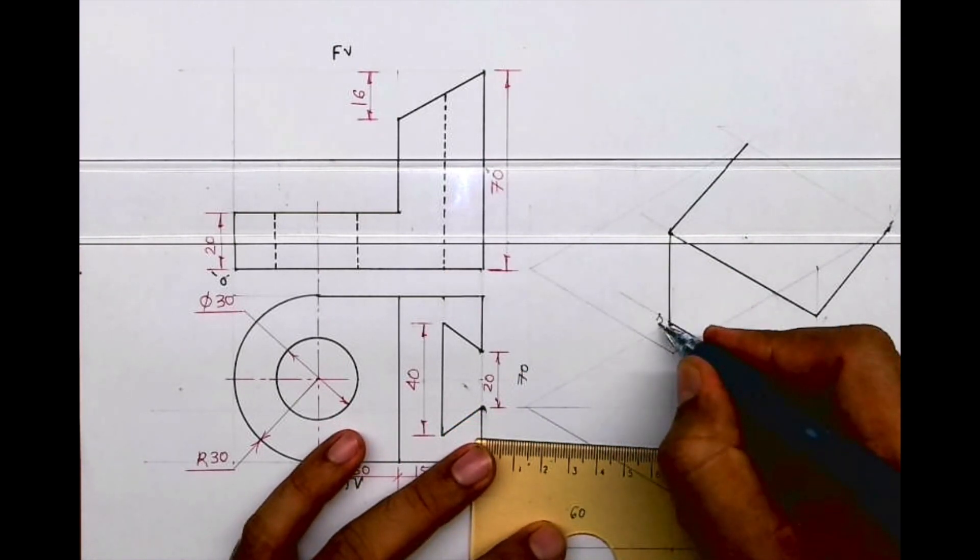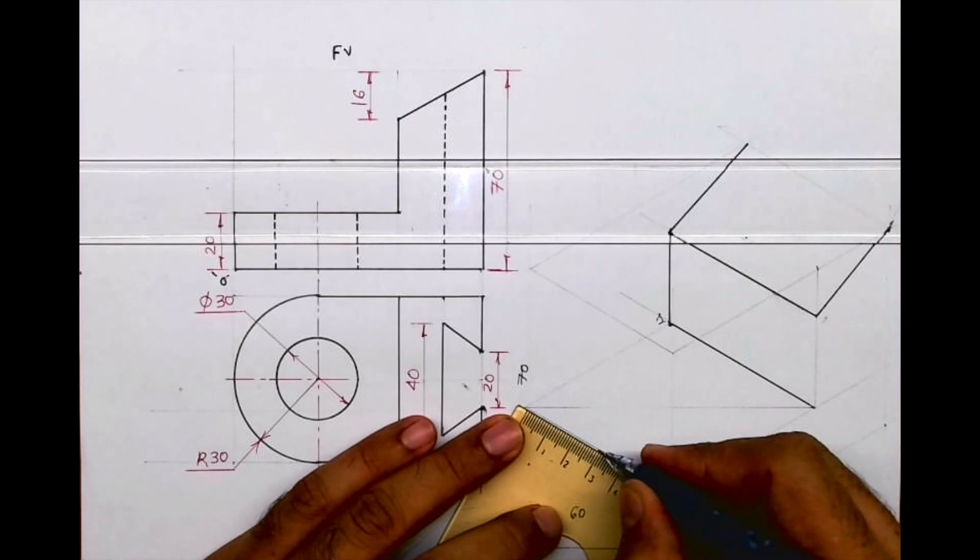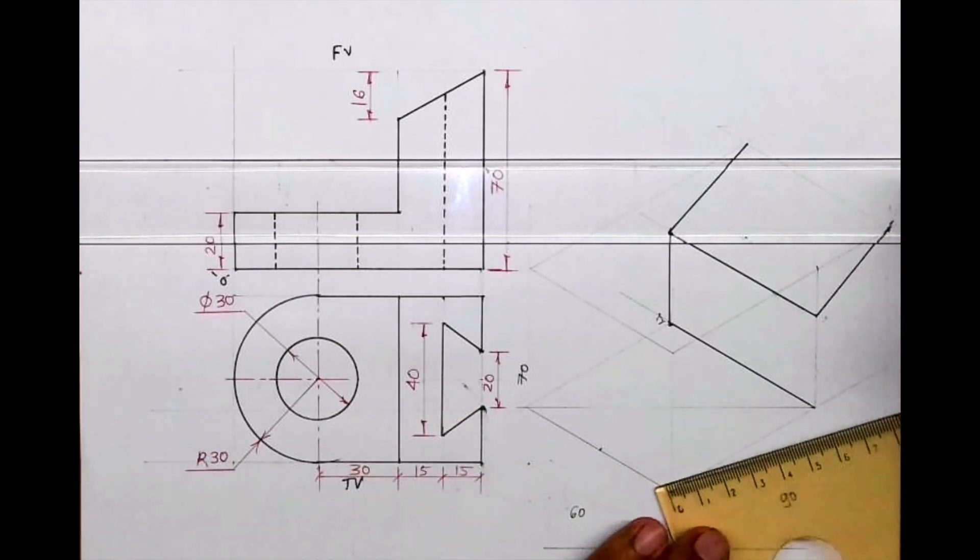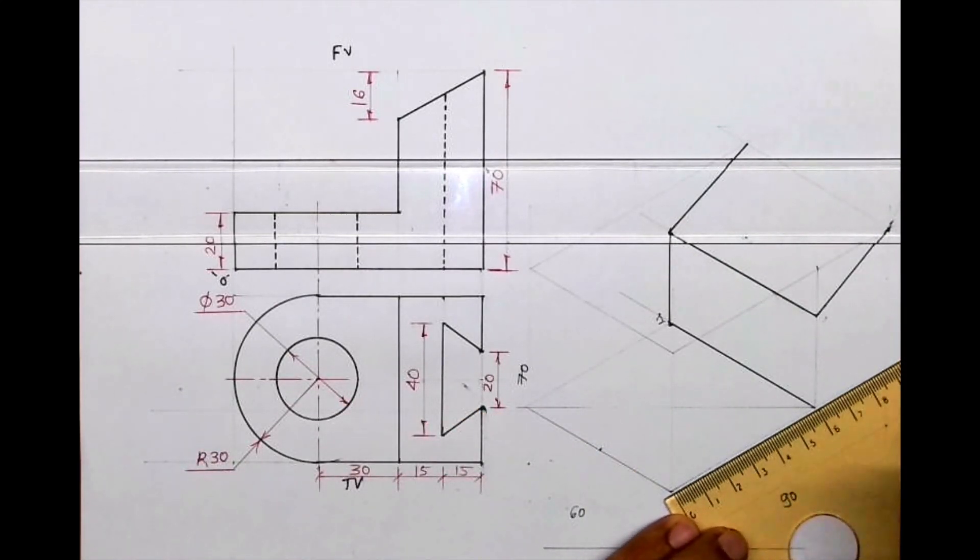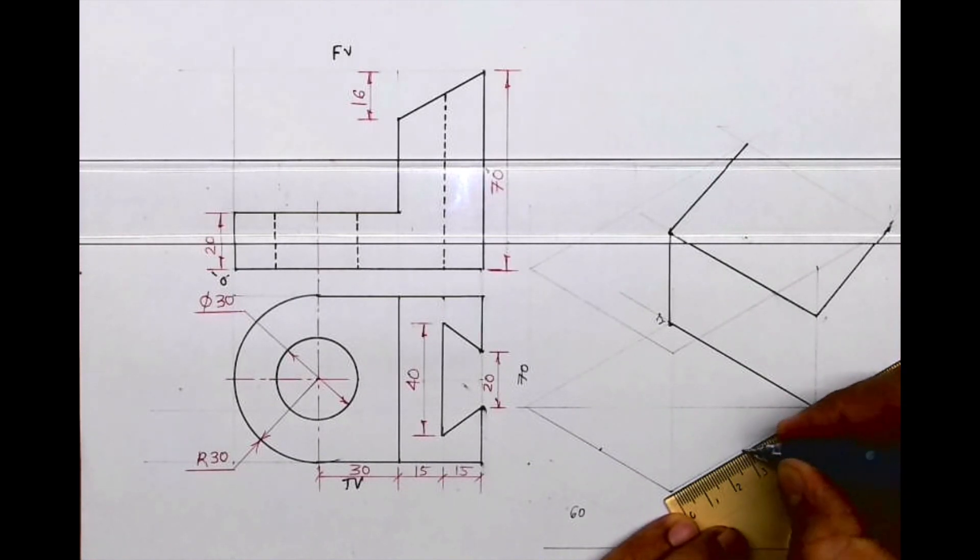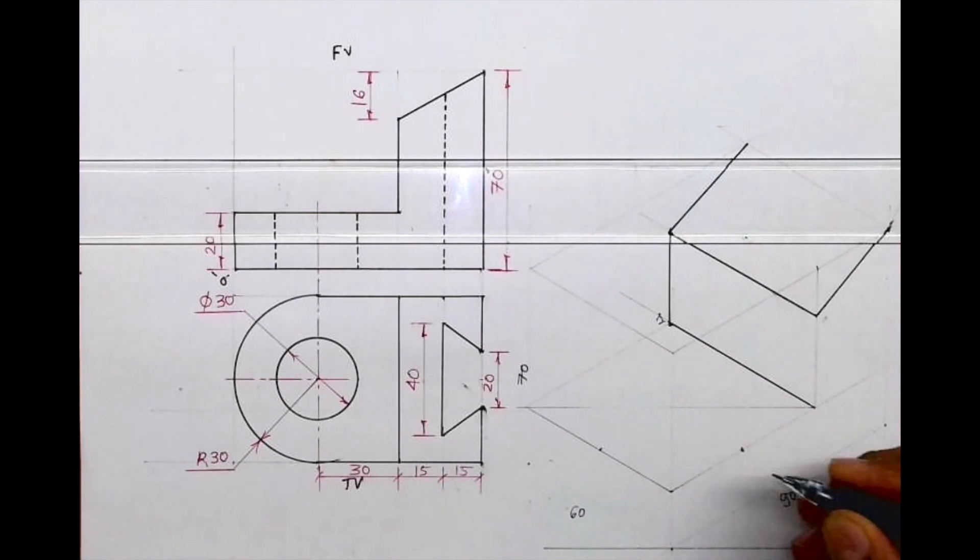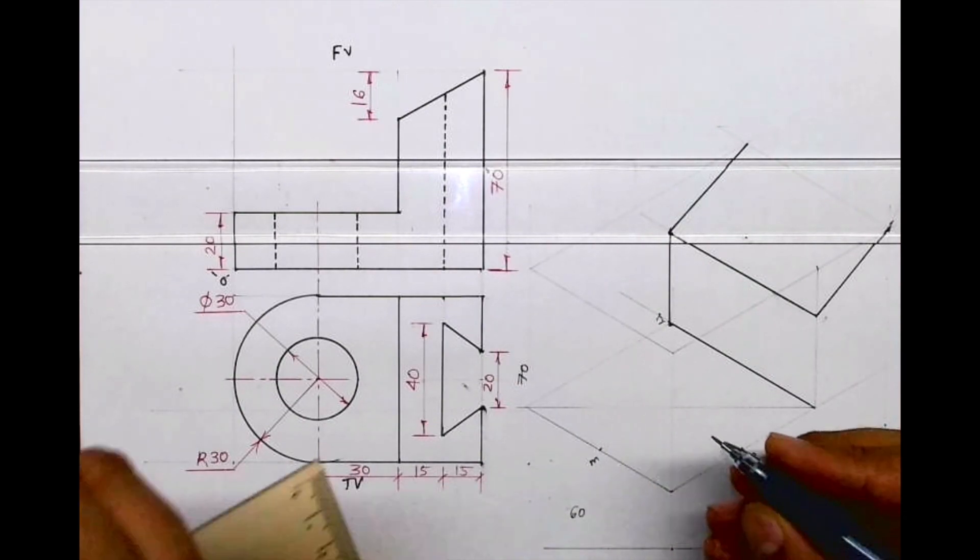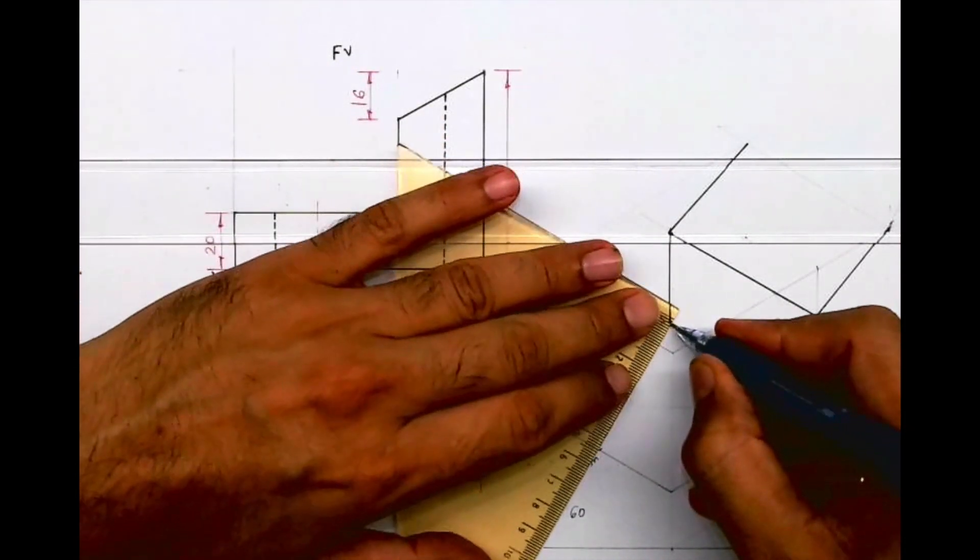So I can do that. We already have a rhombus. We'll draw longest diagonal. This point, this is one, this I'll mark as midpoint m, this also midpoint m. Now we join one to m.